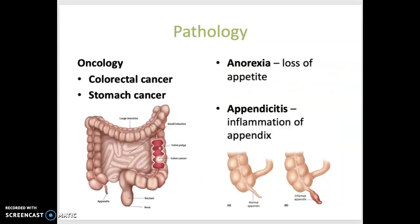A couple of forms of cancer: colorectal cancer typically originates in the lining of the colon or the rectum, and it's unfortunately very common in the United States. Stomach cancer originates in the lining of the stomach. This is not quite as common in the U.S., but if you get it, it does have a high mortality rate.